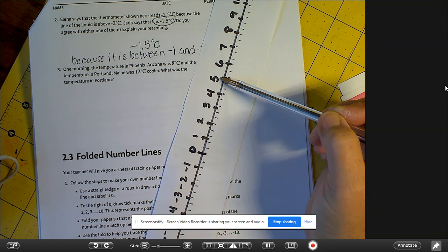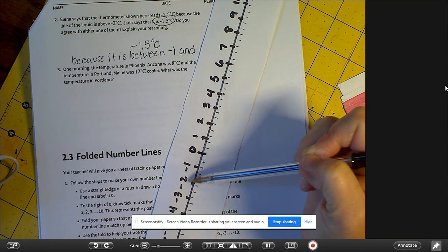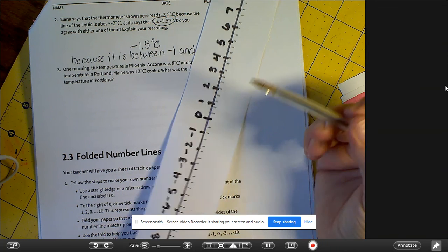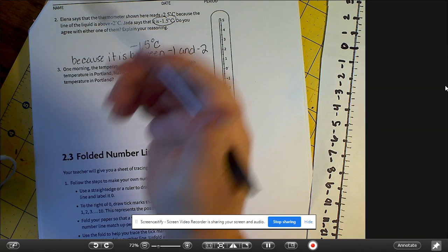So if it's at 8 and it goes down 12, it would be 1, 2, 3, 4, 5, 6, 7, 8, 9, 10, 11, 12. So it's going to be negative 4 degrees in Portland.